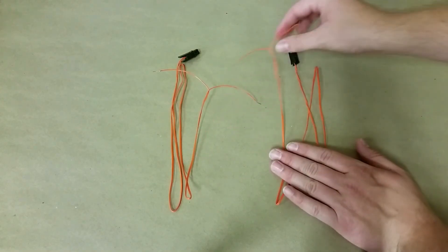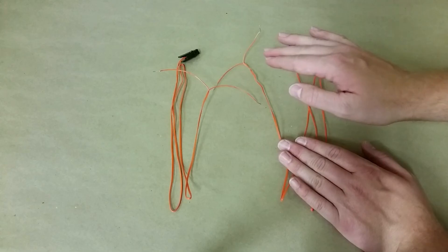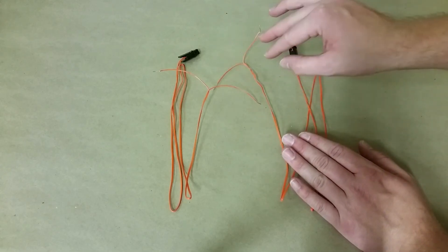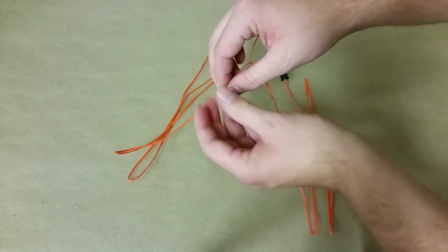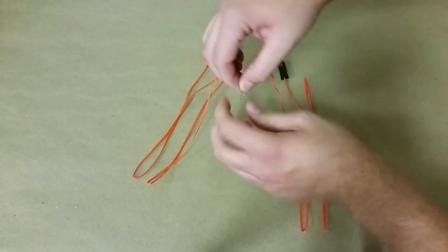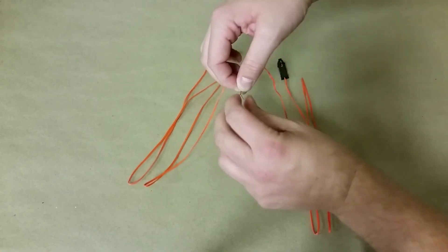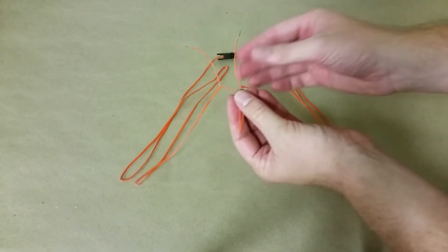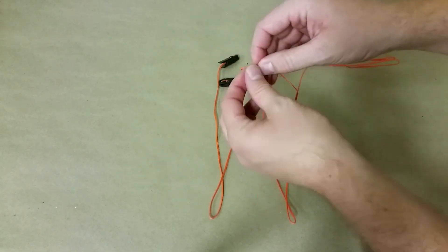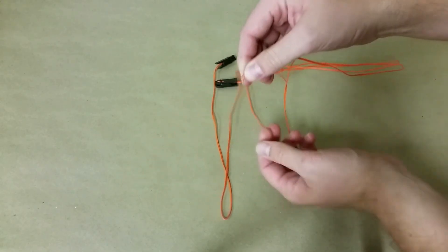And all we're going to do is take one wire from each Talon and twist it together. It doesn't matter which one you do. So we're just going to grab these two wires, line up the exposed ends, and just twist the wires together. You're going to repeat this process for the remaining wires. Twist it.